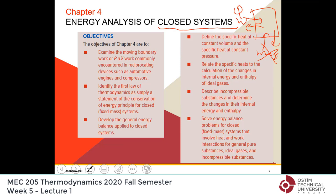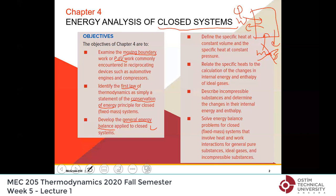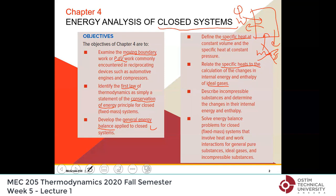So what are the objectives in this chapter? We will go through moving boundary work, also called PDV work. Then we will review the first law of thermodynamics, which is conservation of energy, and apply the general energy balance to closed systems. We will go through examples using water and refrigerant, then switch to ideal gases and define specific heat in general, and then specific heats for ideal gases — how to calculate internal energy changes and enthalpy changes. Finally, we will go through incompressible substances and do energy balances there.